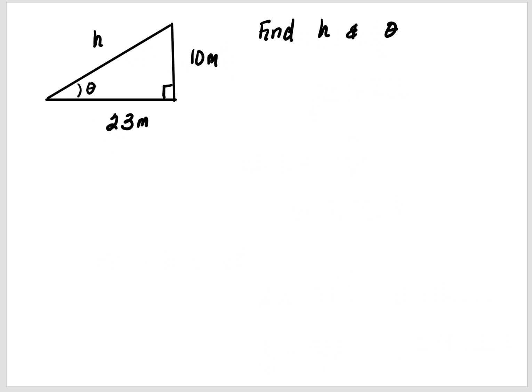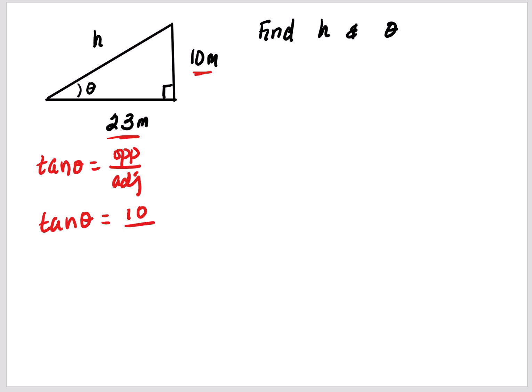Pause the video, find h and theta — h is hypotenuse, theta is the angle — and check your answer. In this problem I'm going to solve for the angle theta first. Since I have my opposite and adjacent, I'm going to use tangent theta — tangent theta is opposite over adjacent. Opposite the angle is 10, and next to is 23. So tangent theta becomes 10 meters divided by 23 meters.